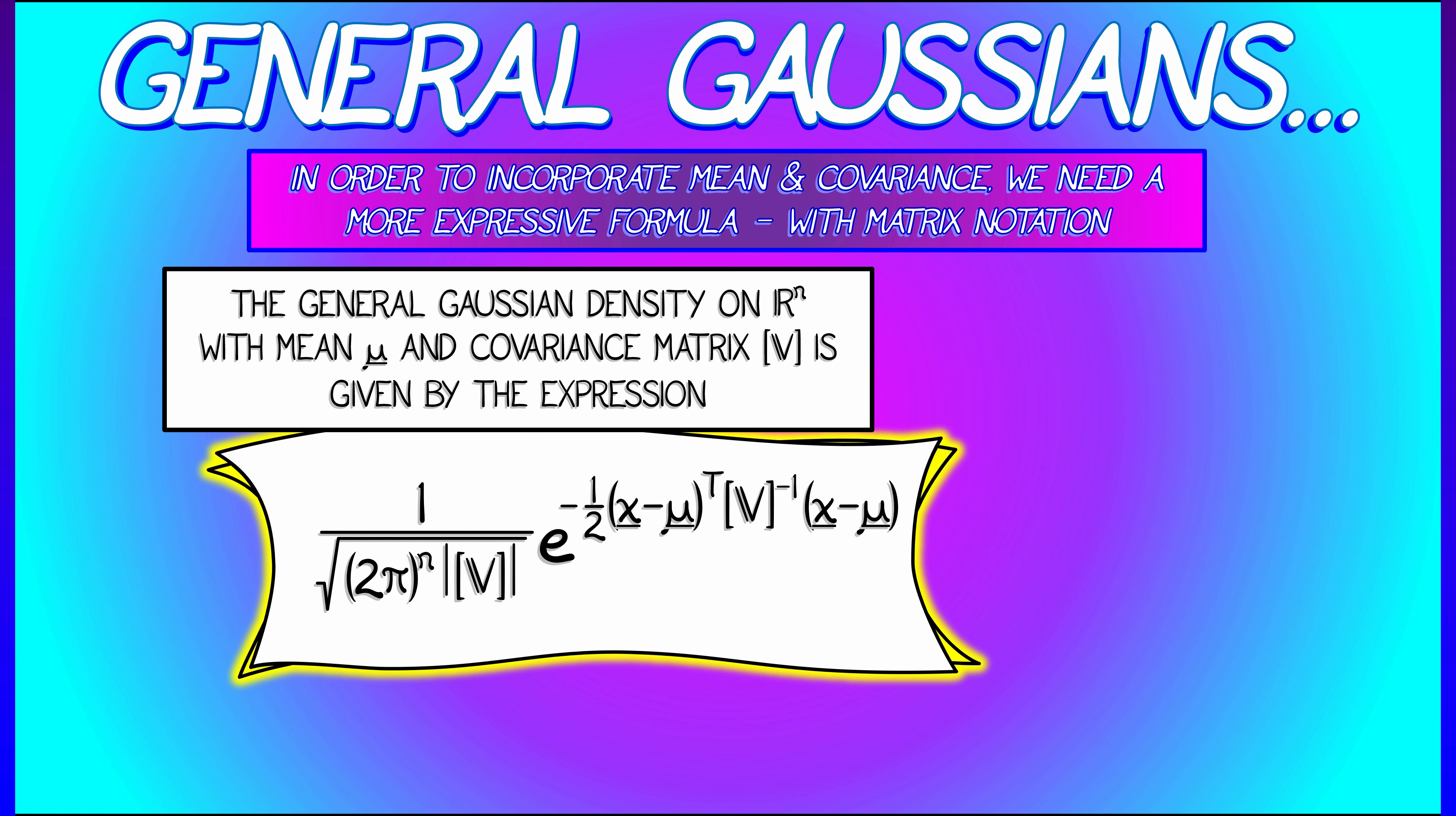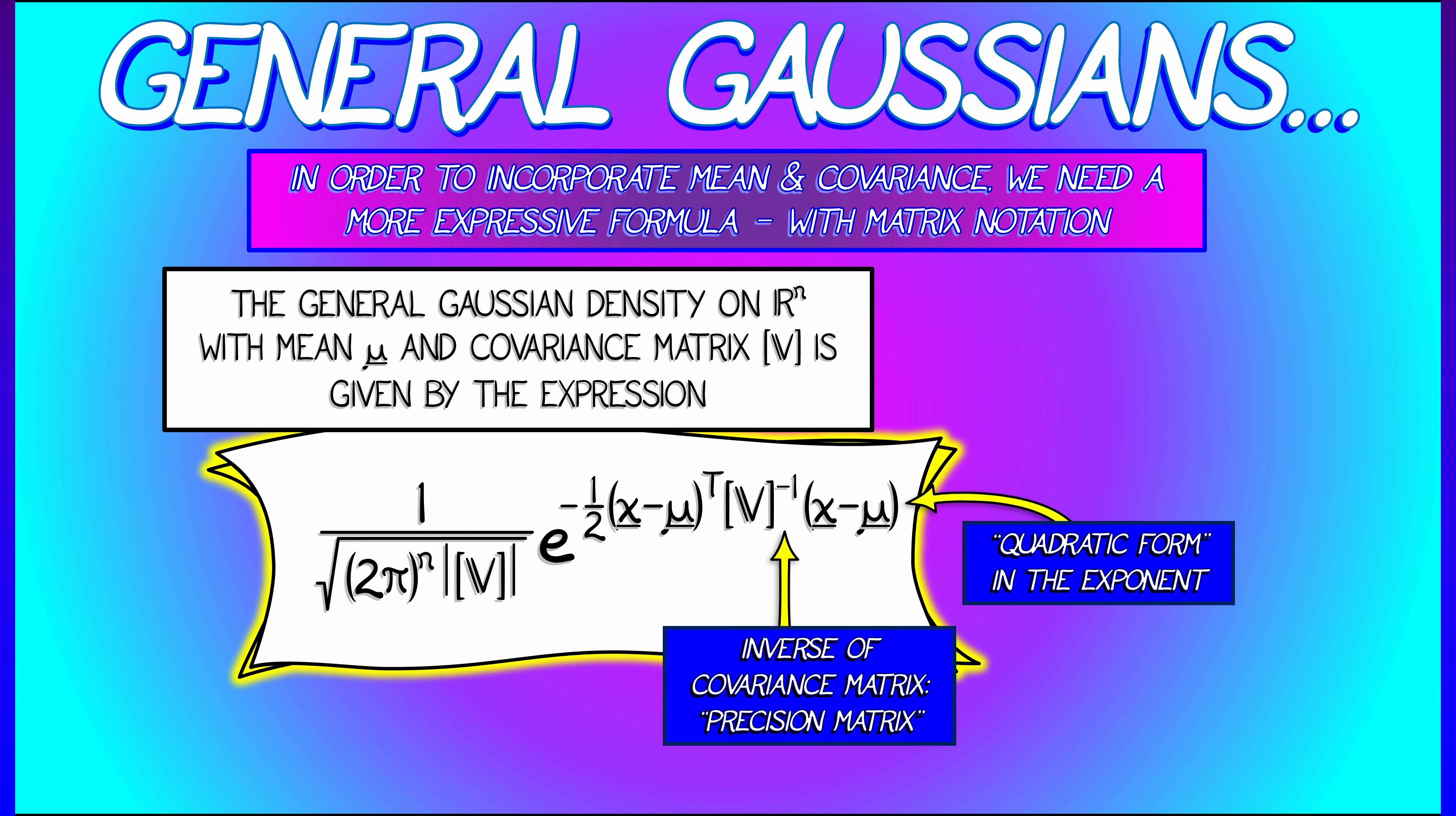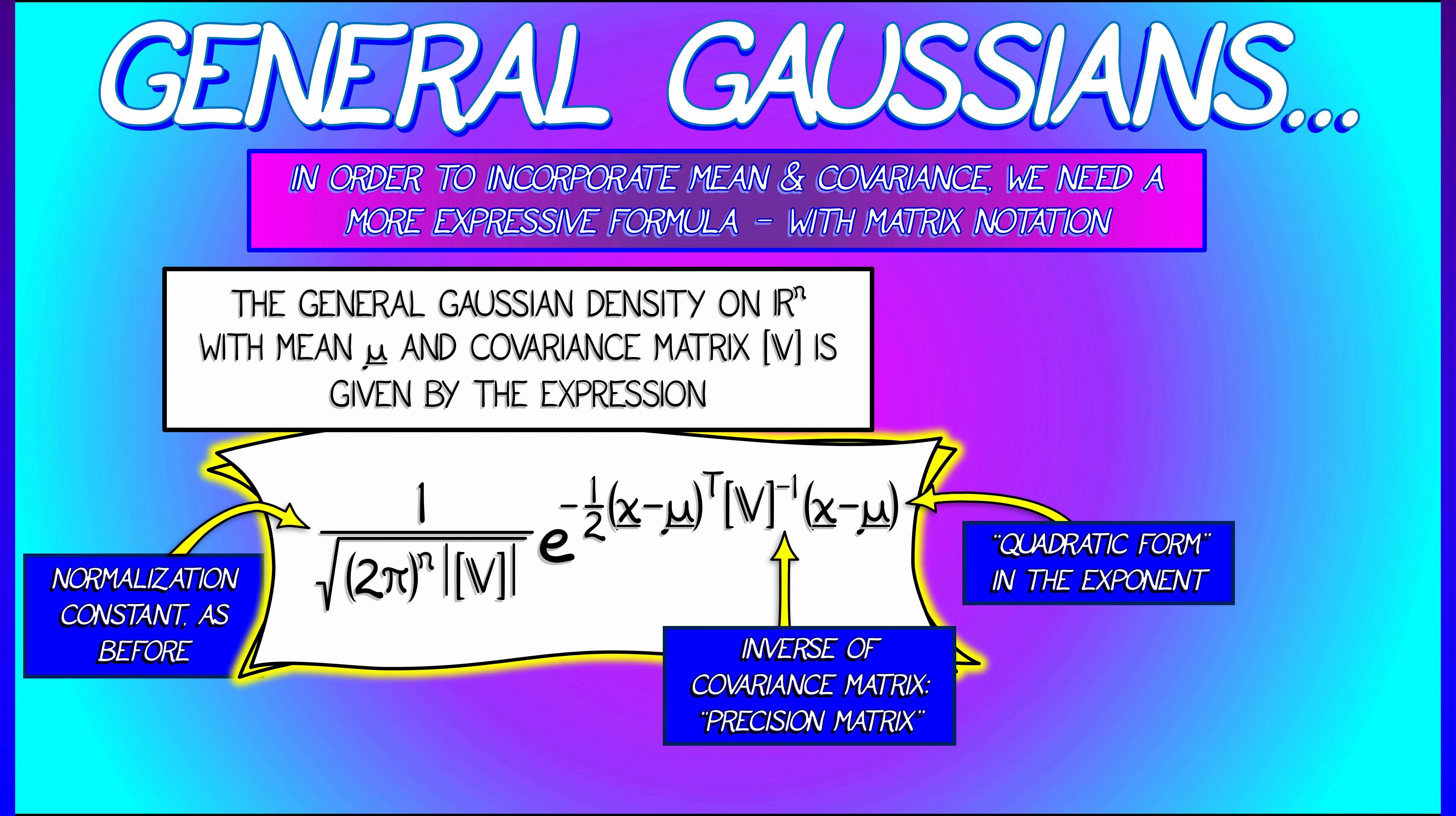Now that exponent, that's really a quadratic form using the inverse of the covariance matrix, something often called the precision matrix. That normalization constant is similar to what we saw in the standard case, but now it incorporates the determinant of the covariance matrix. Now, this is a complicated formula. You have to think about it to really get it inside your head.